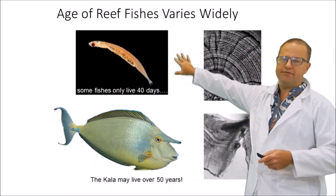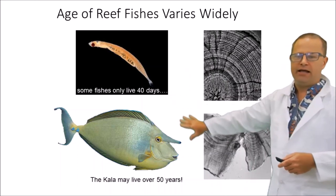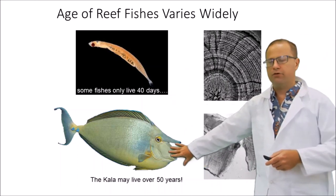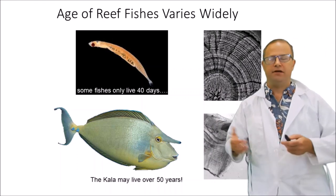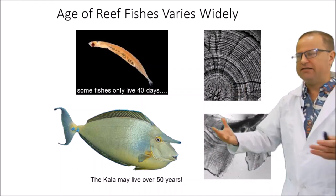So some fish like Schindleria live very, very short lives. They're basically like gnats or mosquitoes. And then some fish on coral reefs like this unicorn fish can live up to 50 years, some even more. So there's a very big difference on how long fish can live on the reef.